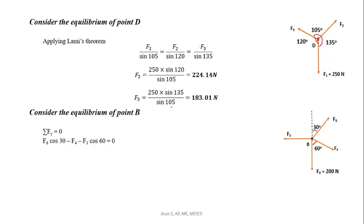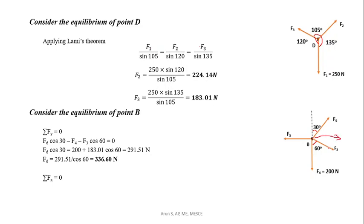Substituting known values, we get F6 = 336.60N. Then applying Sigma Fx = 0: F3 sin(60°) + F6 sin(30°) − F5 = 0, giving F5 = 326.79N.